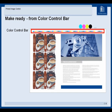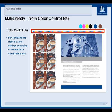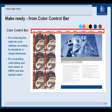The make-ready starts using the color control bar, which can contain CMYK and also special colors to achieve the right ink zone settings according to standards or visual references — for controlling tone values and special colors, and as a reference for quality control analysis.